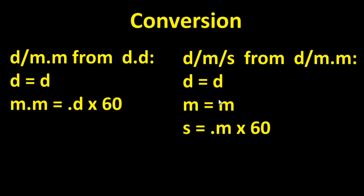To convert the other way, simply reverse the process and multiply the decimal portions by 60. To determine degrees-decimal minutes from decimal degrees, the degree remains the same, and the decimal minute is calculated by multiplying the decimal degree by 60. To convert decimal minutes into degrees-minutes-seconds, the degree remains the same, the minute remains the same, and the seconds are calculated by taking the decimal portion of the minute and multiplying by 60.